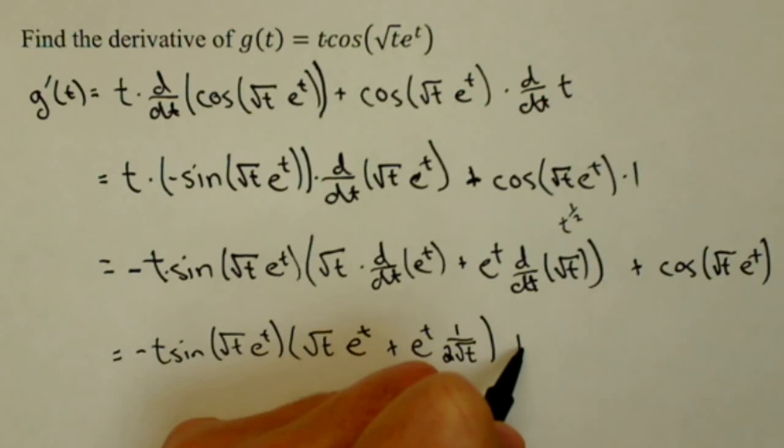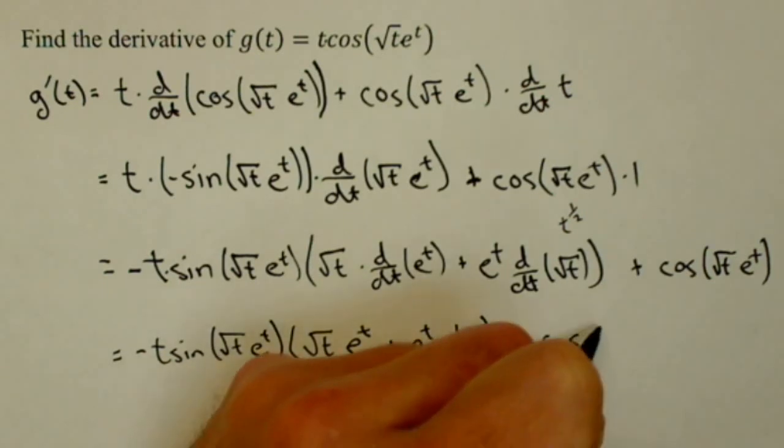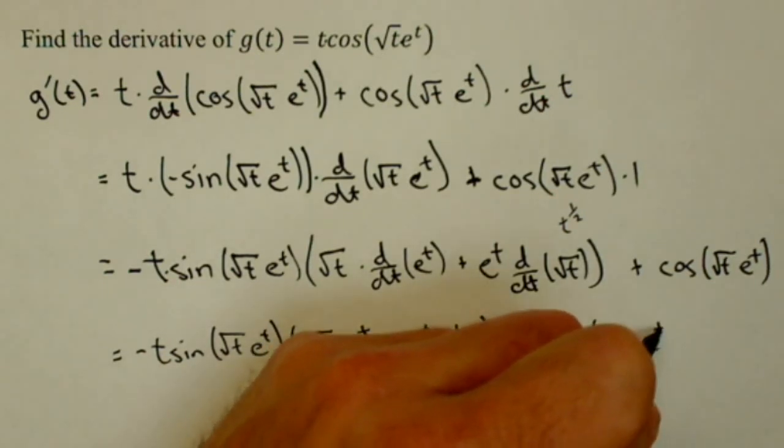Close those parentheses. Plus cosine of square root of t e to the t.